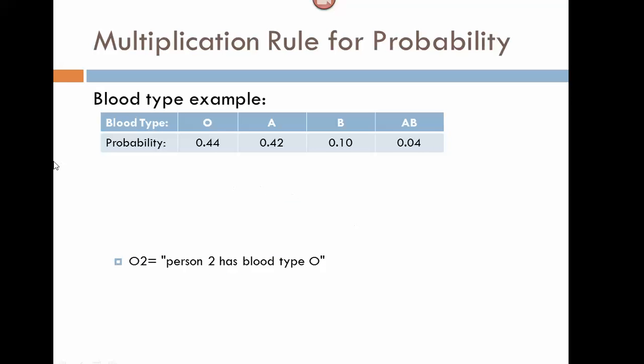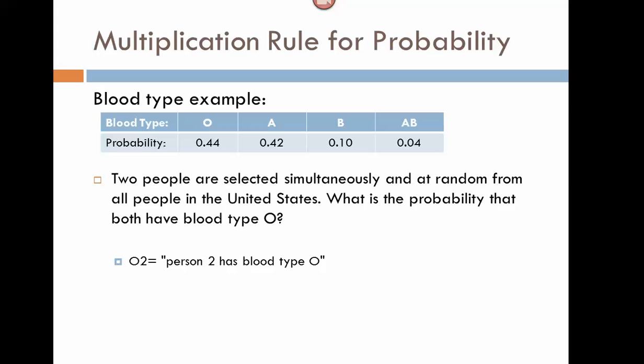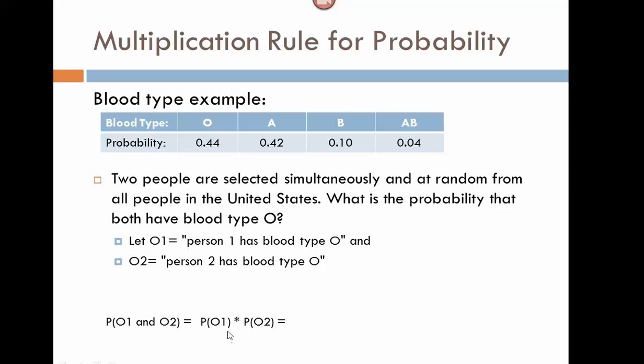Let's look at our blood type example. Here we have the blood types of the general population and what percent has each blood type. If we select two people simultaneously at random from all people in the United States and want to know the probability that they both have type O blood, we define O1 and O2 as each person having type O blood. The probability that both have type O equals 0.44 times 0.44, giving 19.36%.